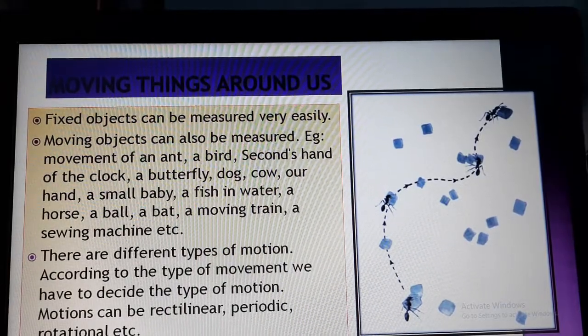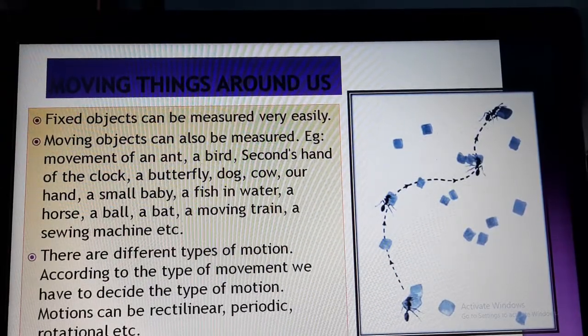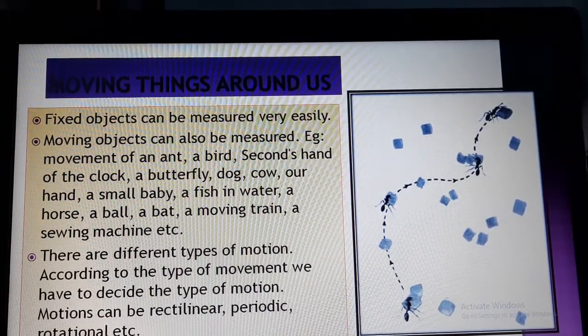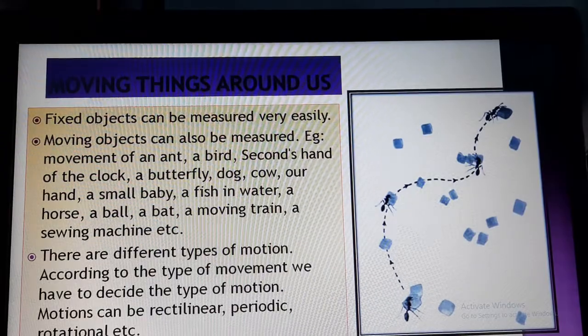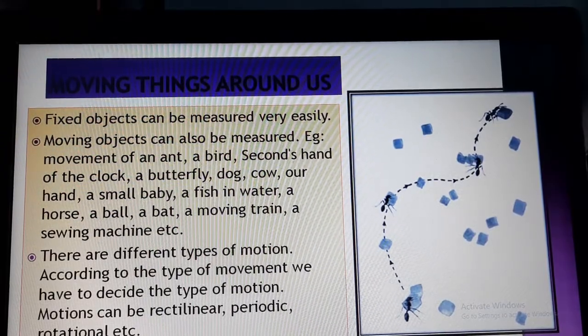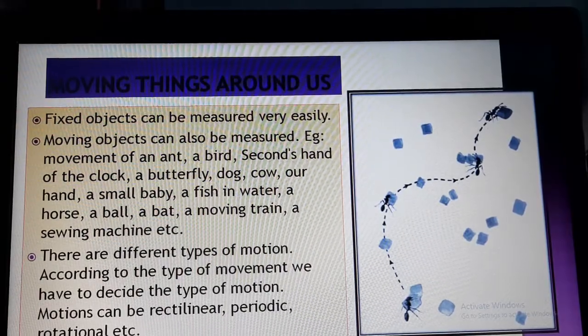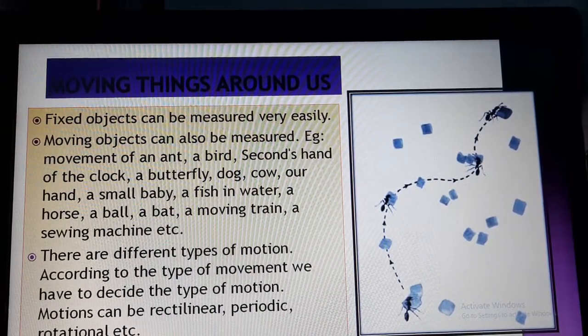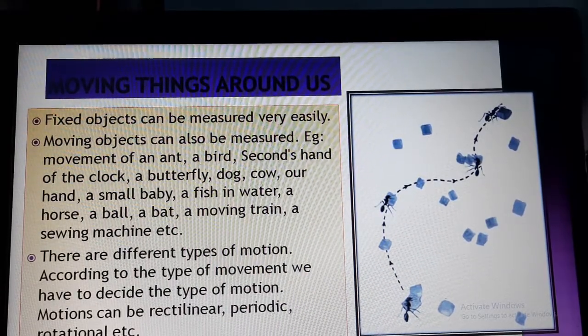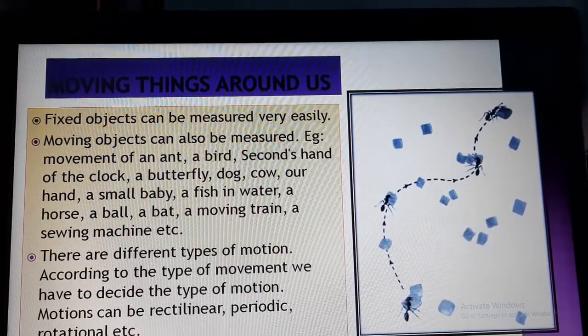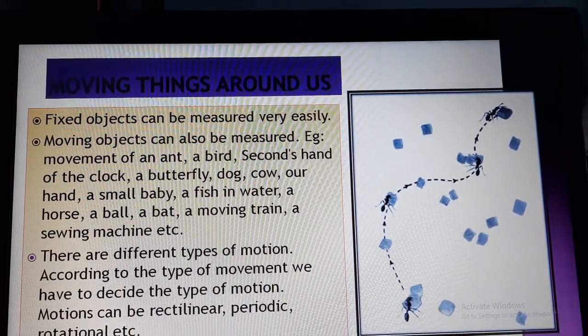When the object is fixed, it is very easy for us to measure. But when the object is in motion, then there are actually many types of motions. We will discuss about the type of motions in our next video class. There are different types of motion. Rectilinear motion, periodic motion, rotational motion. We will discuss about them. Now on the type of movement, we have to decide the type of motion. How the thing is moving. Suppose the pendulum is moving from left to right, again from right to left. This is the type of motion. So which type of motion it will be, we will discuss in the next class.